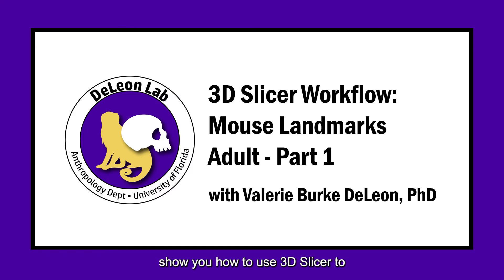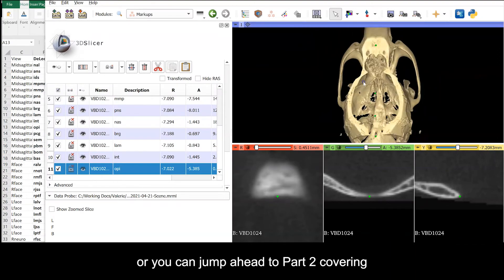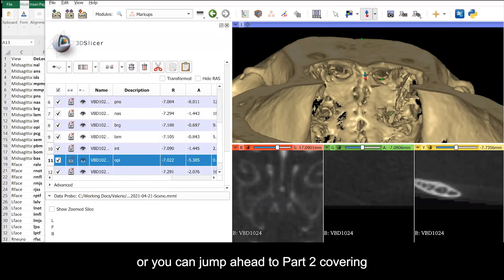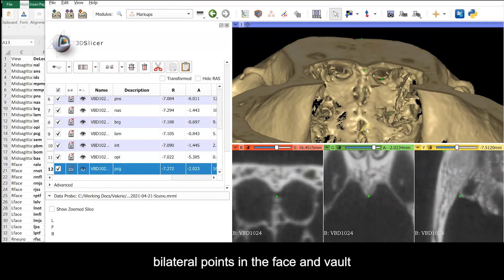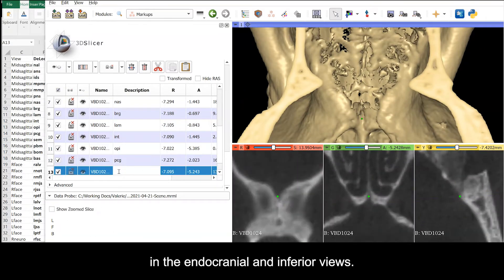This is Valerie DeLeon, here to show you how to use 3D Slicer to collect landmark coordinate data from reconstructions of the adult mouse skull. In part one, we'll cover mid-sagittal landmarks, or you can jump ahead to part two, covering bilateral points in the face and vault, or part three, covering bilateral points in the endocranial and inferior views.